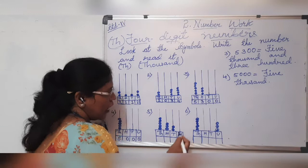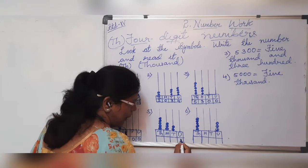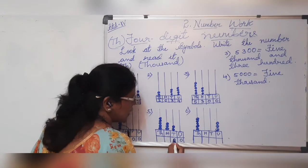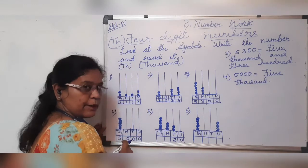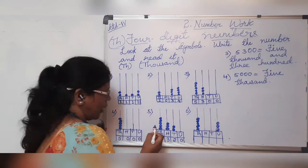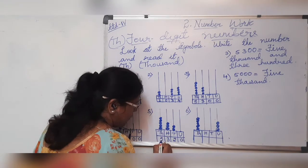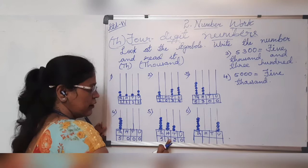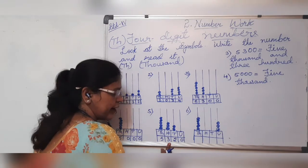Now the fifth sum. Are you seeing any beads on the units place? No — put 0. Tens place: there are 2 beads. Hundreds place: 3 beads — 1, 2, 3. Thousands place — 1, 2, 3, 4, 5 beads, so it is 5. Read the number after me: 5,320. How will you read this number? Five thousand three hundred and twenty.